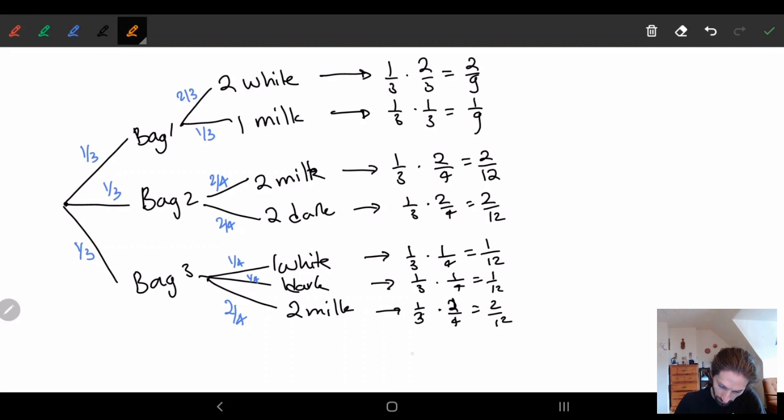So basically what we have here is choose bag, choose bag, and this one is choose chocolate. And now remember what we're asking: what's the chance of getting a dark chocolate? Chance of dark chocolate.